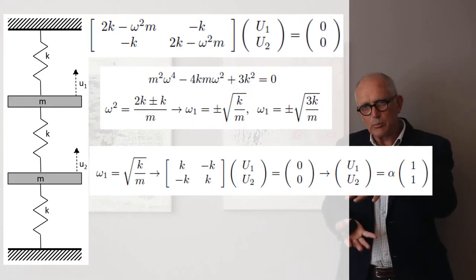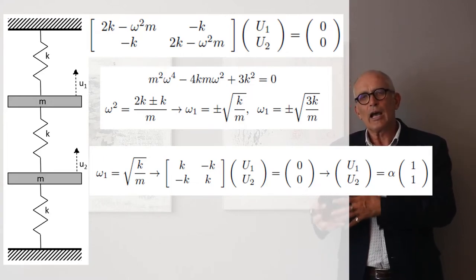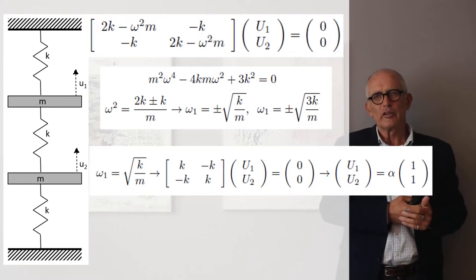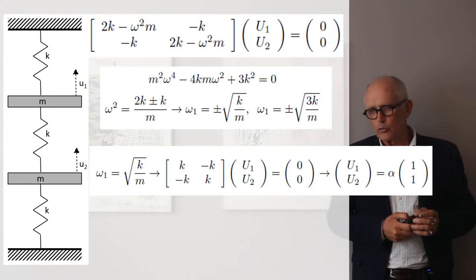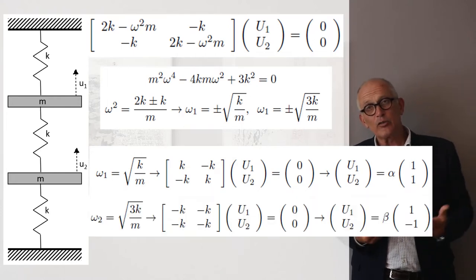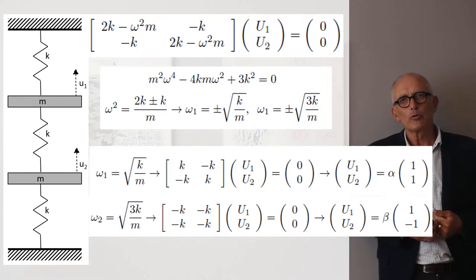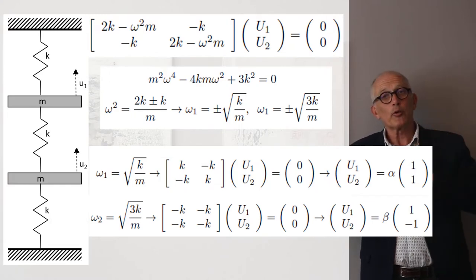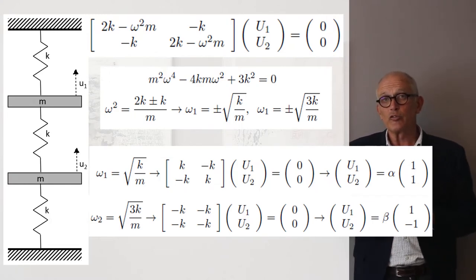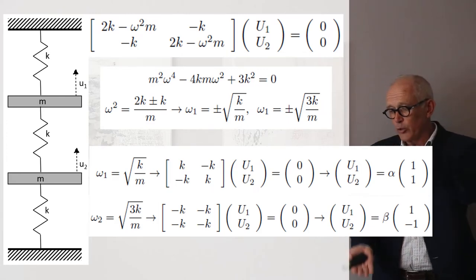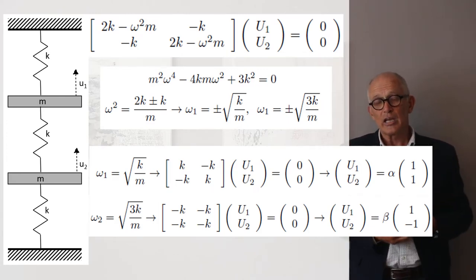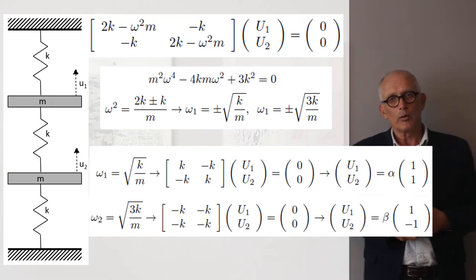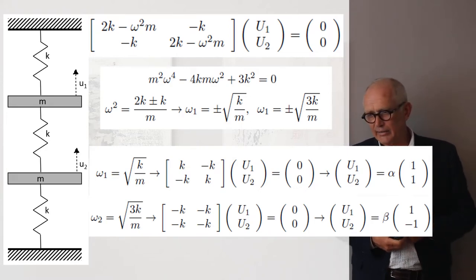We call that type of displacement the mode, the vibration mode associated to the resonance pulsation square root of k over m. And if we take the second resonance frequency, we replace omega by square root of 3k over m, we see that the equation becomes k times u1 plus k times u2 is equal to zero. And so any displacement where the two masses are going to move out of phase is going to be a possible motion at that pulsation square root of 3k over m.